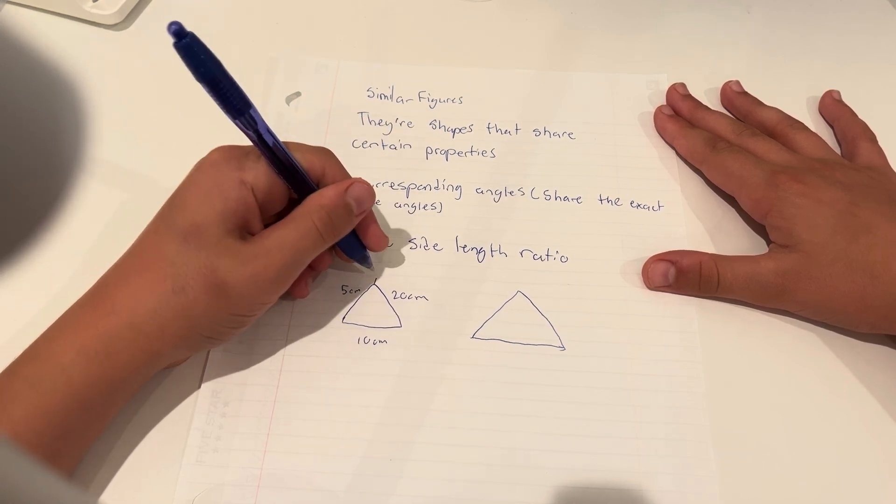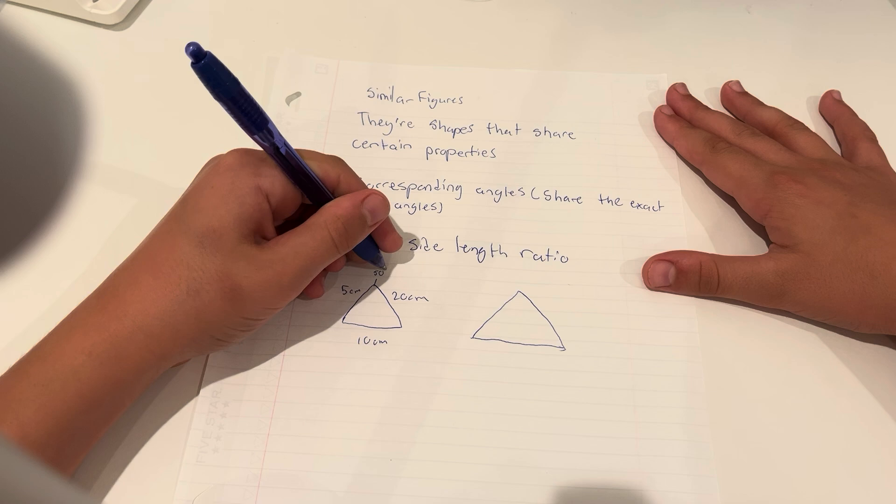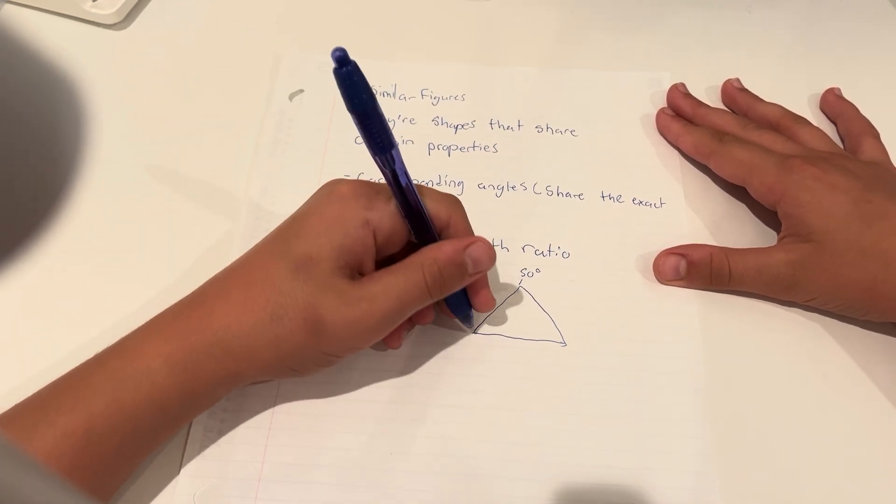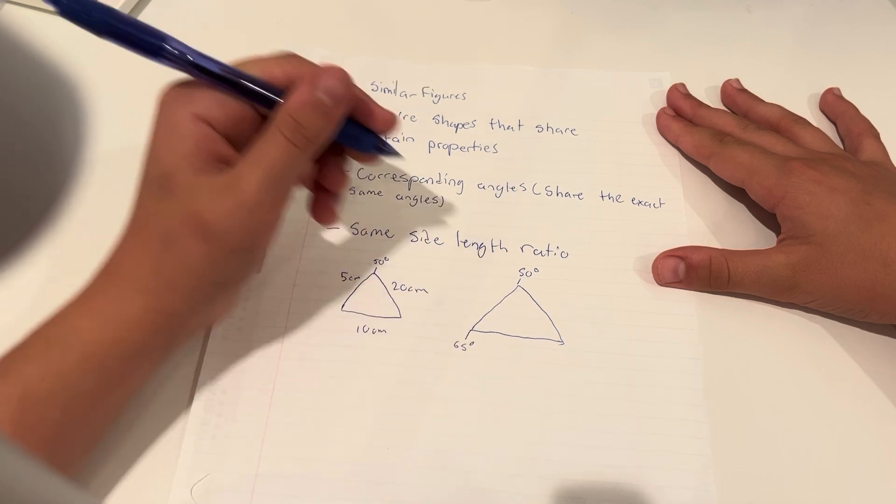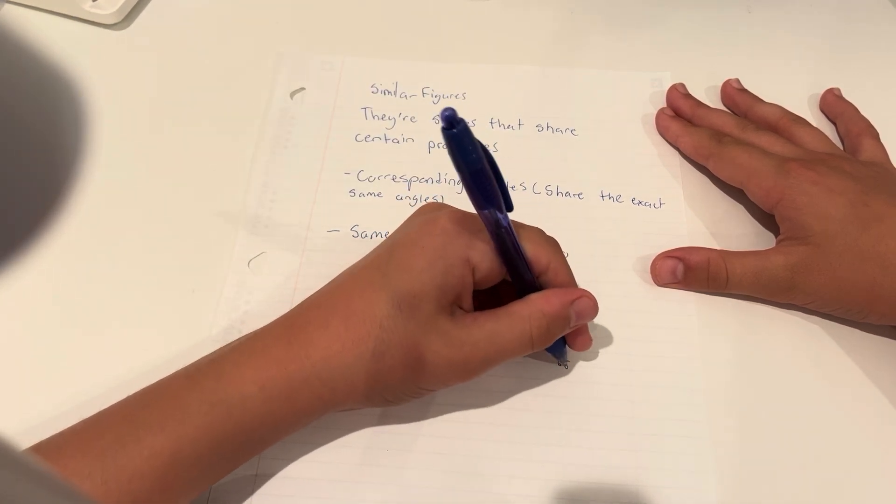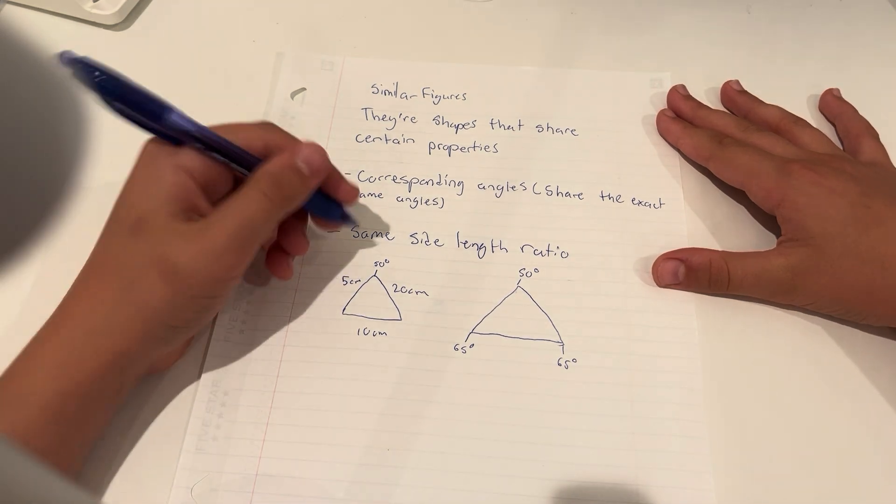So let's say this is 50 degrees. This needs to be 50 degrees, meaning this would need to be 60, this could be 65. And this could be 65, that would work. So these need to be the same.